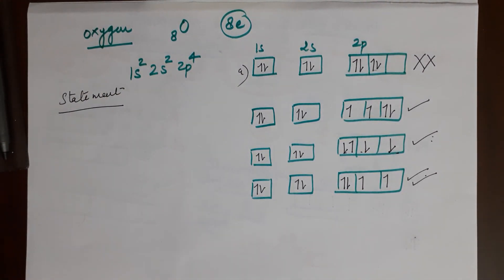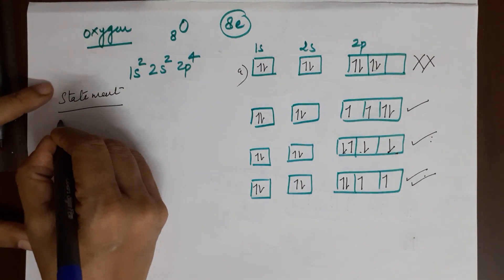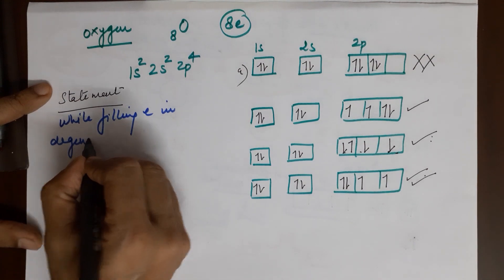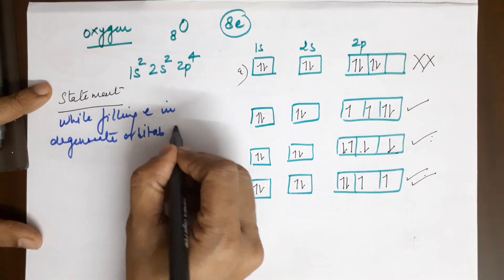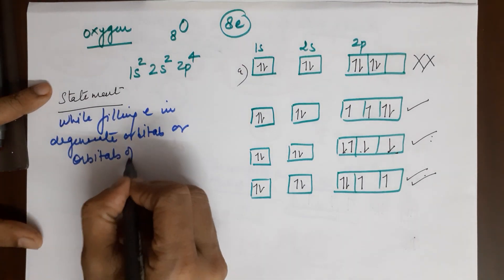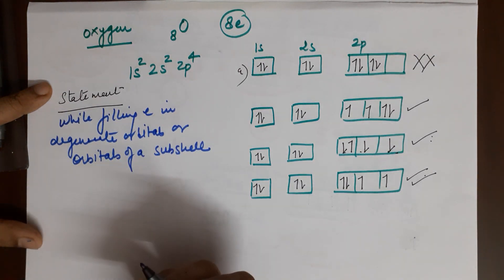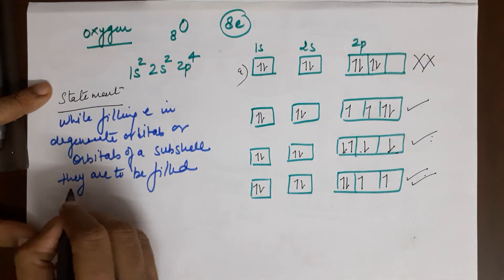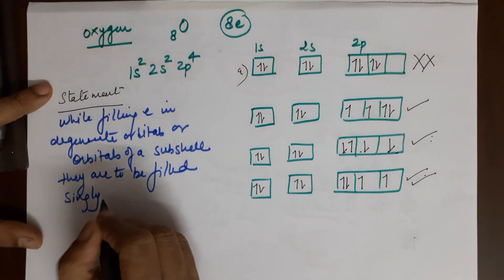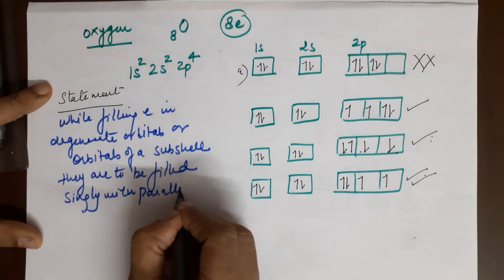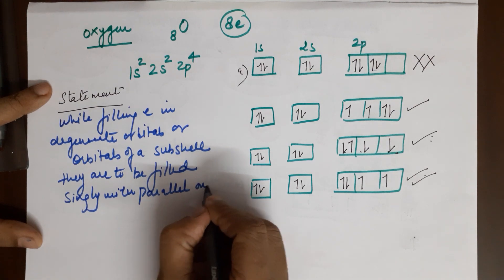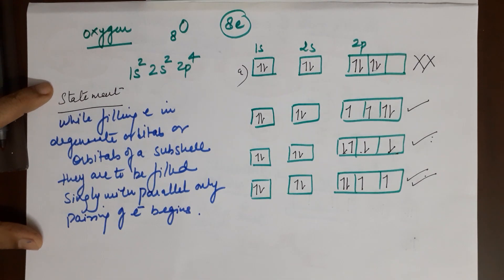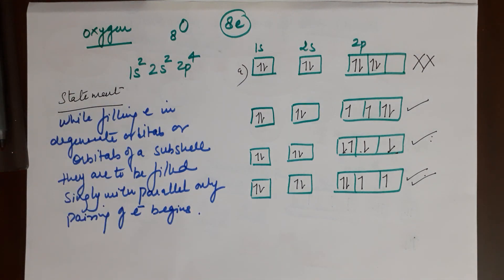The formal statement of Hund's Rule of Maximum Multiplicity: while filling electrons in degenerate orbitals, or orbitals of a subshell, they are to be filled singly with parallel spins (same spins). Only then does the pairing of electrons begin.